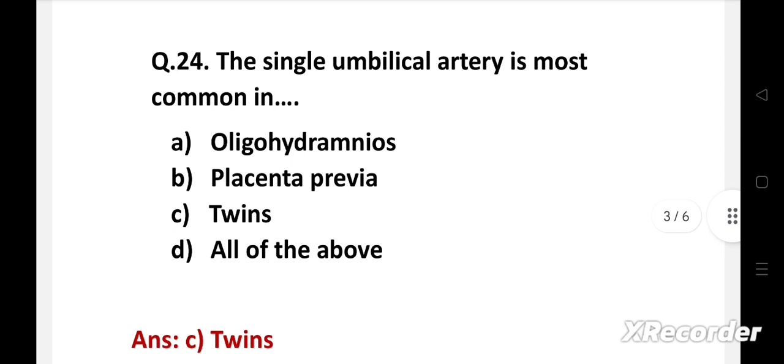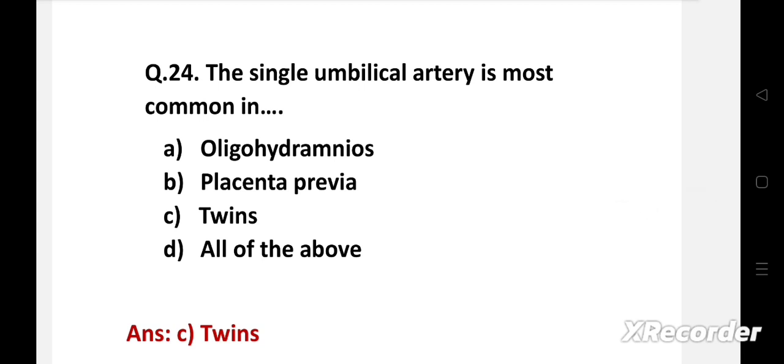Right answer is option C, twins. Monochorionic monozygotic twins is the condition in which there will be single umbilical artery. A single umbilical artery is a malformation of umbilical cord where only one artery instead of two is present. It may be associated with other birth defects.